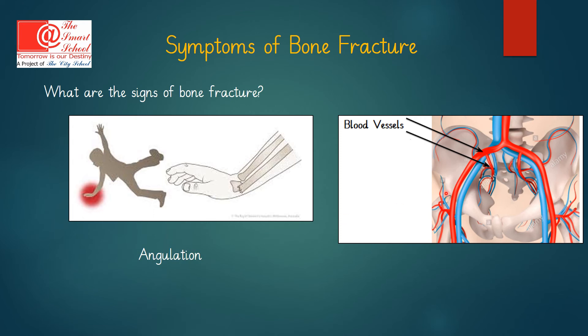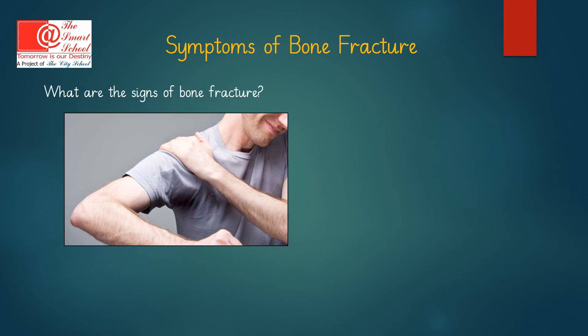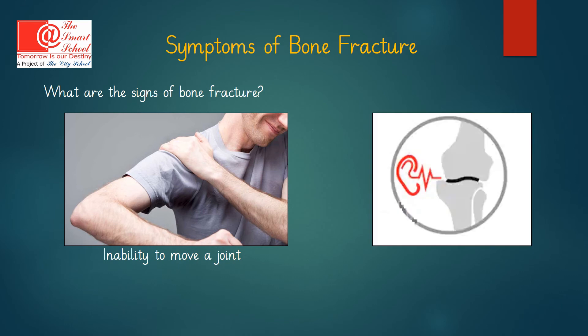Another sign of bone fracture is when blood vessels inside your bone are damaged and there is bleeding at the fracture site. You may also be unable to move a joint — here the person is unable to move his shoulder joint, which may be a sign of bone fracture. A grating sensation is another symptom — this occurs when bone pieces between two bones cause cracking or grating. If a person experiences one or more of these signs, a doctor must examine whether the bone is fractured.